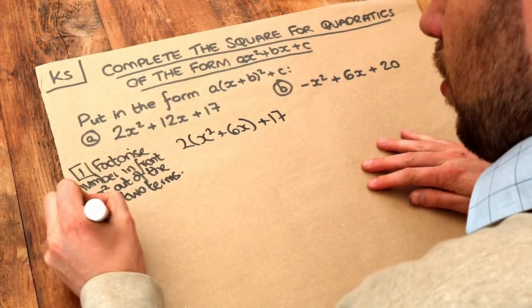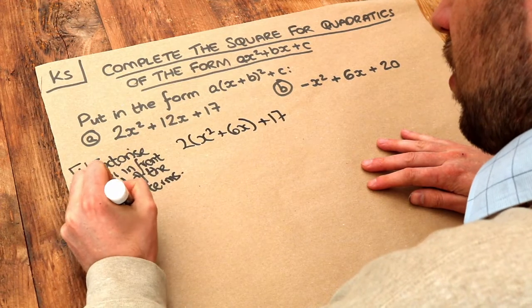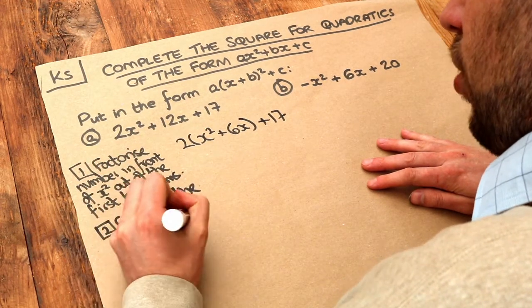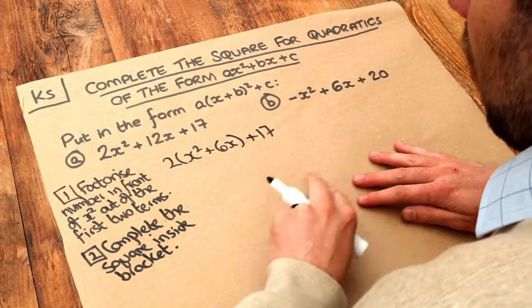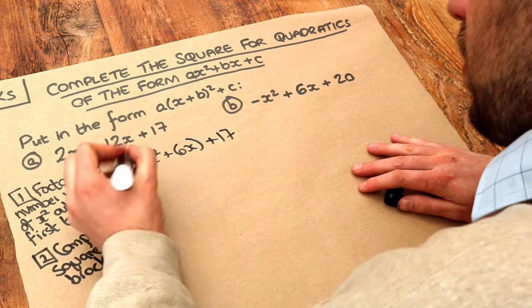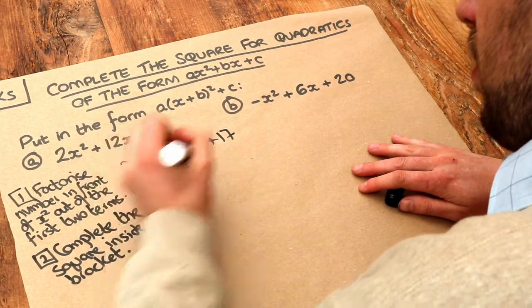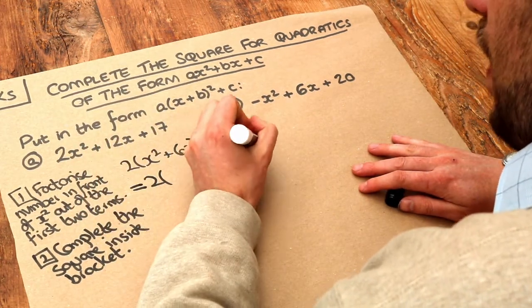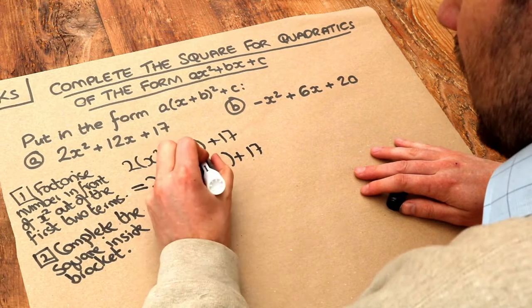And then step 2 is to complete the square inside the bracket. And if you don't know how to do that please explore my video on that when we just have x squared plus something x plus something. So if I just write what we've got again, I'm just going to repeat it and then we're going to complete the square inside here.